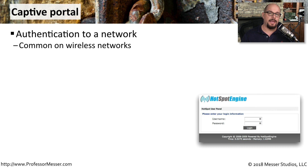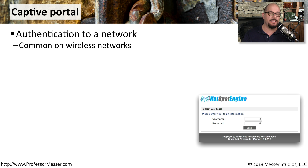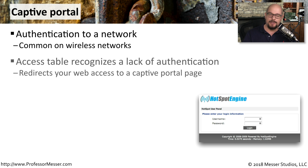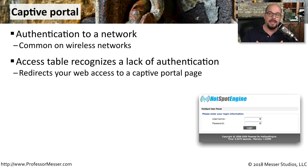Another option for authentication on many wireless networks is you open up a browser and get a pop-up message that asks for a username and password. This is a captive portal, and we commonly see this used on wireless networks where you need access to the internet. This captive portal server maintains a list of everyone who has access to the network and people that don't. If you have not currently authenticated, it prompts a message asking you to provide your username and password.